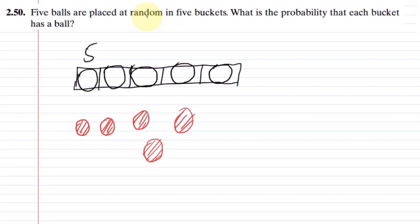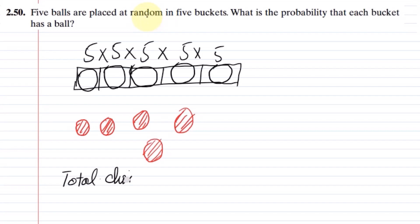Each bucket can get 5 balls. Similarly, the second can get 5 balls, the third 5 balls, and so on. This is an AND operation where each and every bucket has choices of 5 balls. So the total number of choices is 5 multiplied together 5 times, which is 5 raised to the power 5.